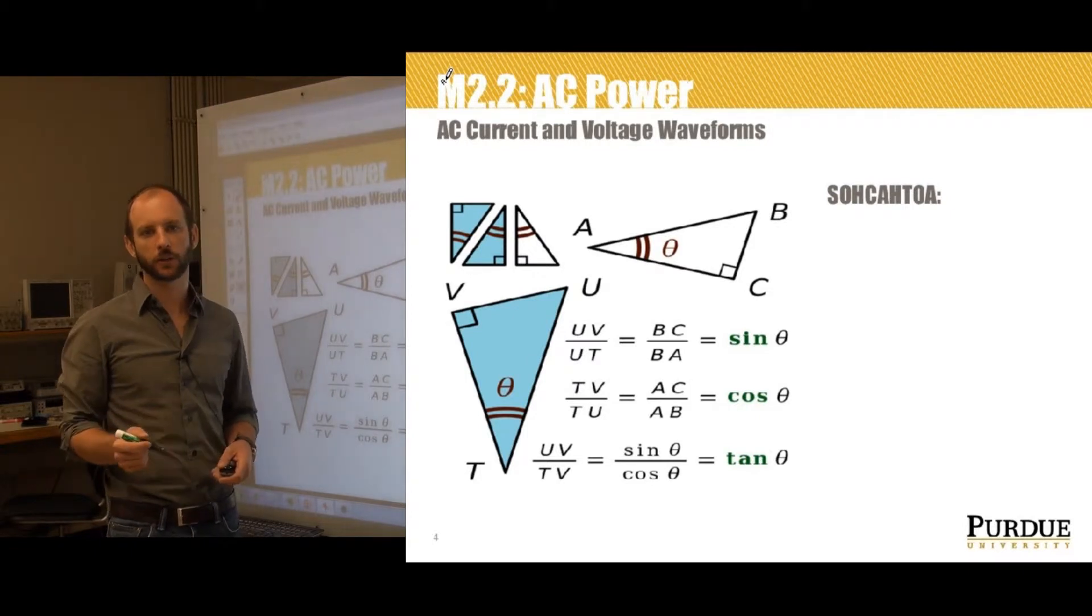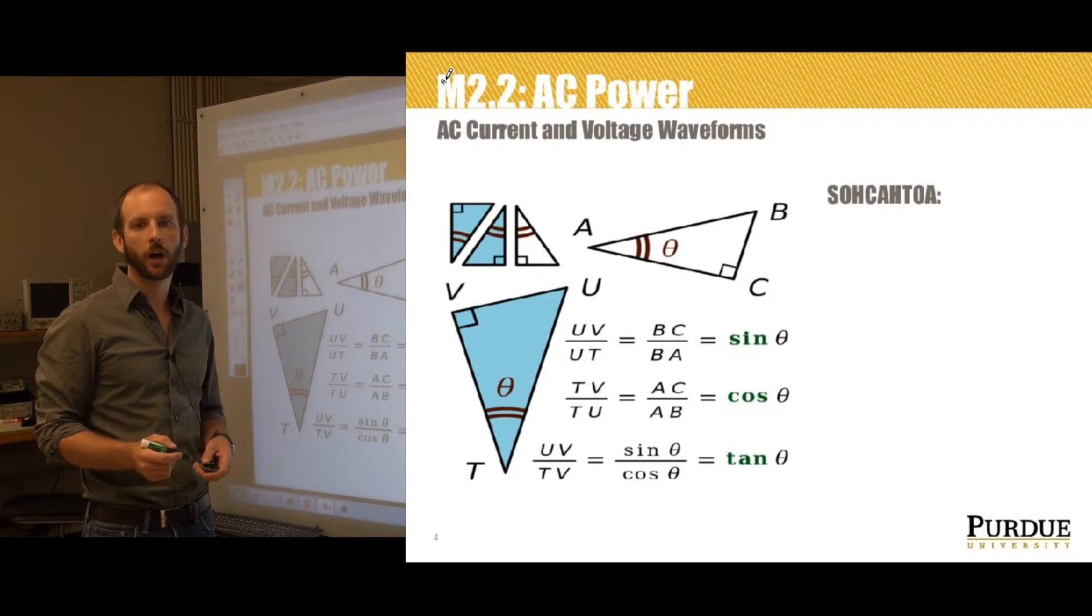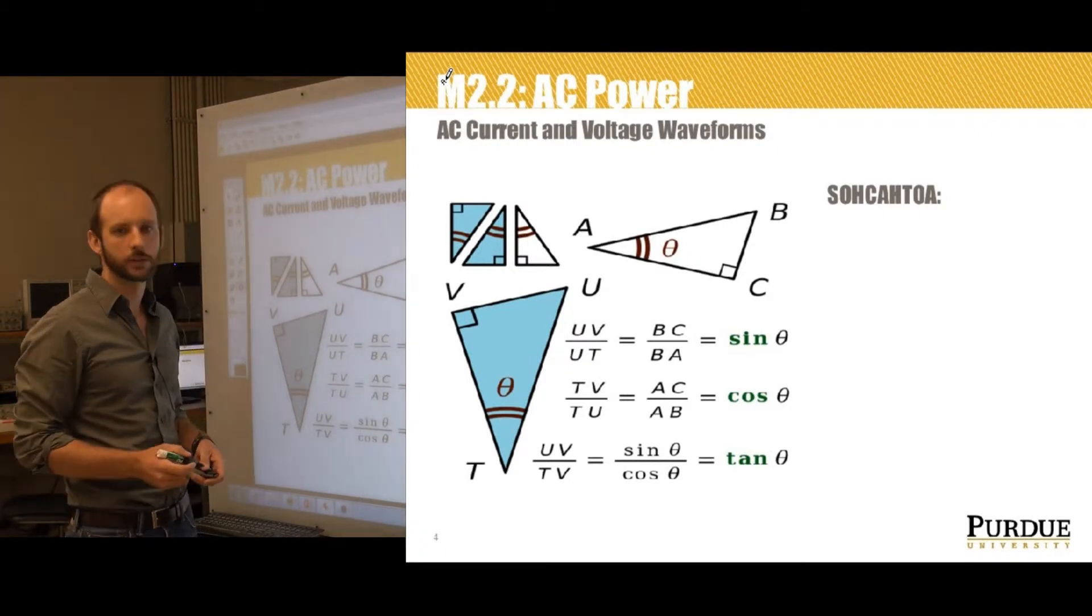In mathematics, the trigonometric functions sine, cosine, and tangent are functions of an angle that relate the angles of a triangle to the length of its sides.